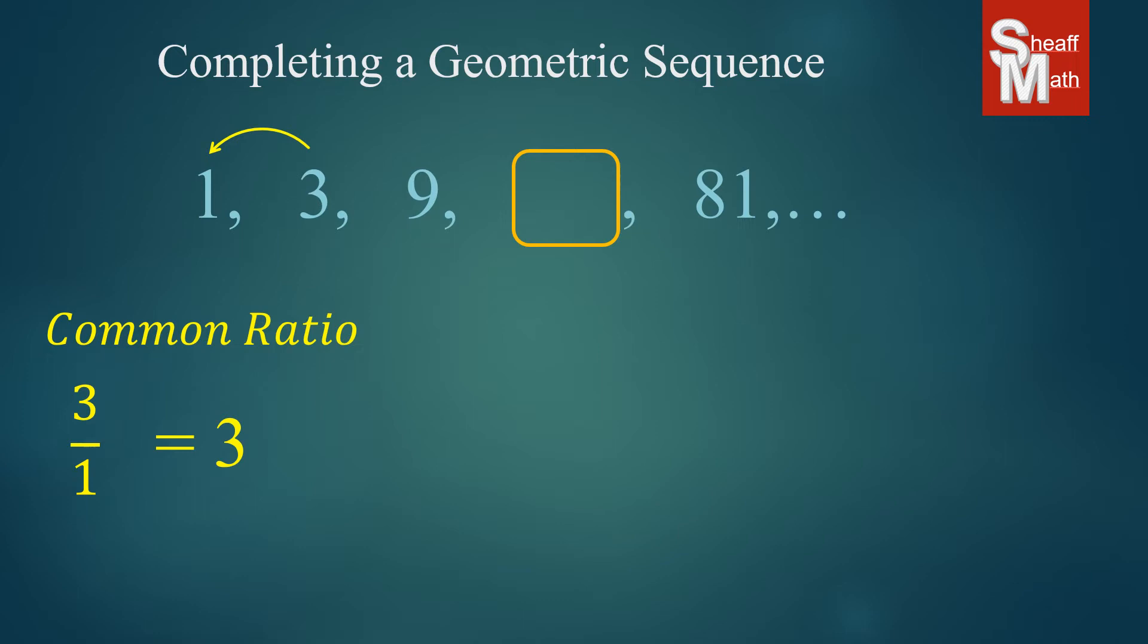So that common ratio, what we're doing is we're going to multiply it by 9 to get that next number there. And 9 times 3 is 27. So it's as easy as that. Once you find the common ratio, then you just multiply that number by the number that comes before the blank.